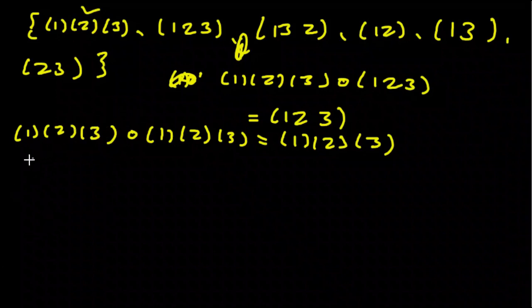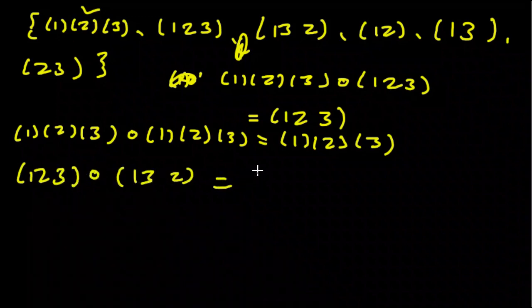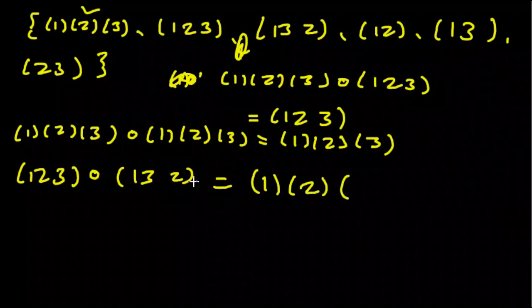If we take (1 2 3) and compose that with (1 3 2), 1 goes to 3, 3 goes to 1, so that remains itself. 2 goes to 1, 1 goes to 2, so that remains the same, and 3 goes to 2, and 2 goes to 3, so there we go. And you can try this from the other side, and it does work. So we found the inverse of this element and this element.